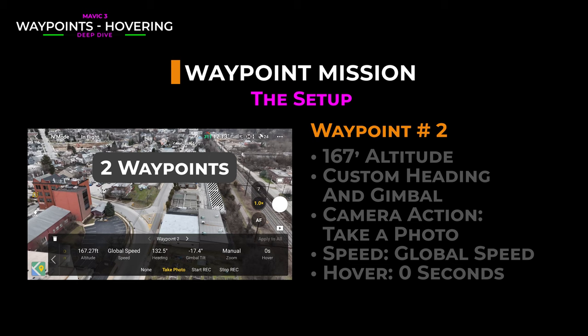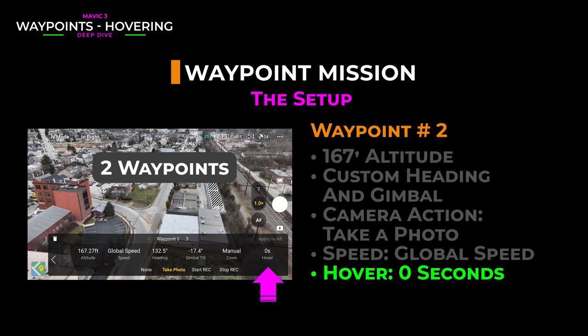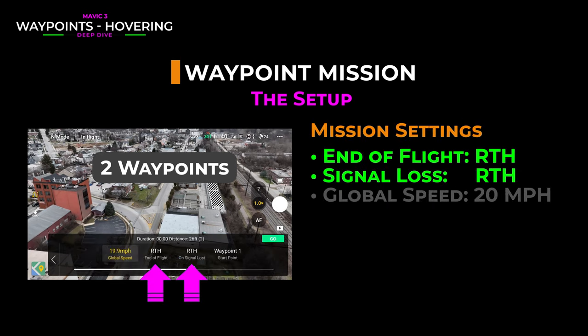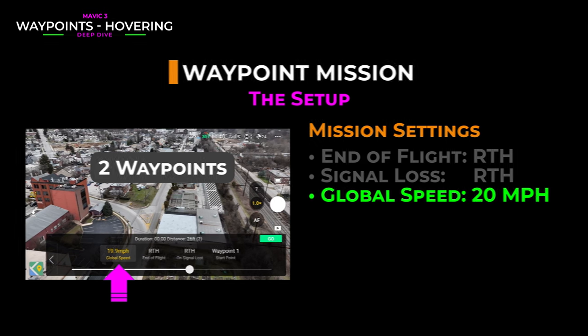The second waypoint in the mission is about 26 feet away, and it's set up almost exactly the same. It too will take a photo, but there's one exception: this waypoint is not set to hover. The end of flight and signal loss settings are both set to return to home, and the global speed is set to around 20 miles per hour.